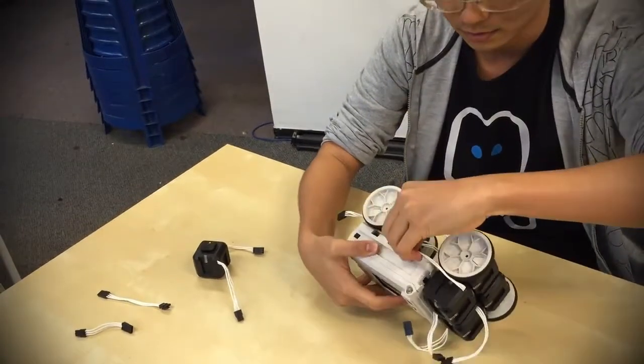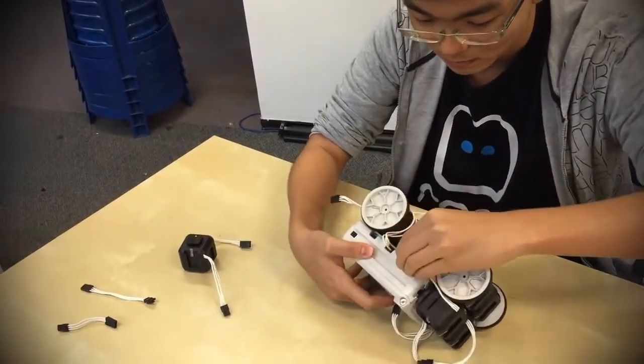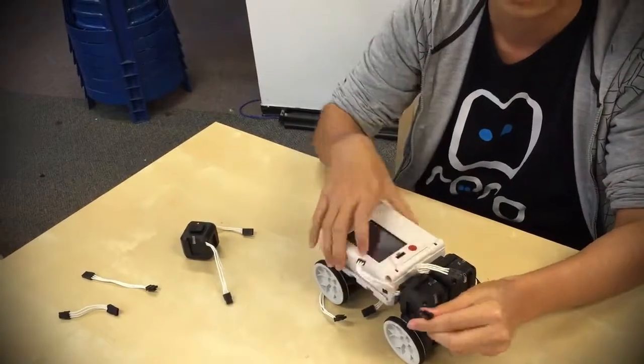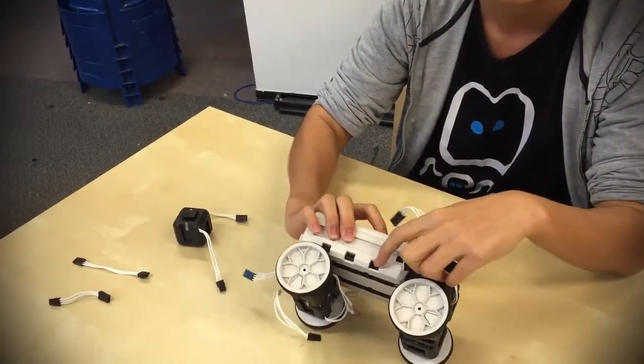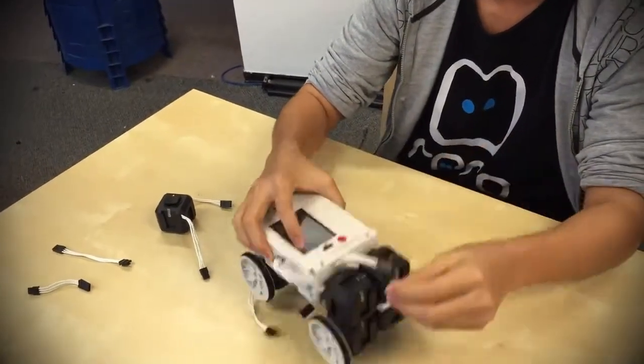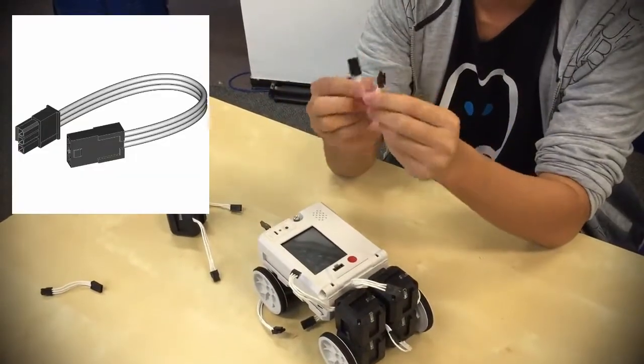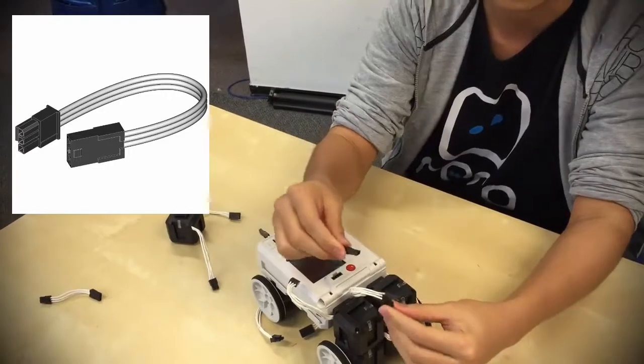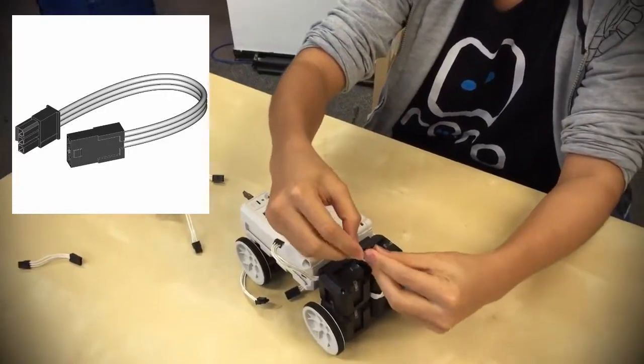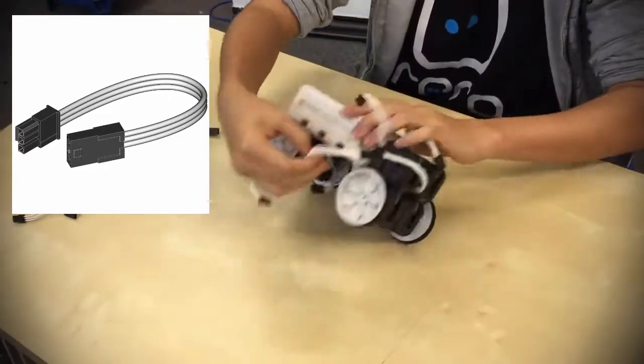So connect all of them into the controller. Now what if something like this happens. So I've connected all the connectors I can. But let's say this connection, this connector, this male connector cannot reach the port on the controller. Now there are two ways to fix this. First you can take the extension provided in the set. So you can just do it like this.